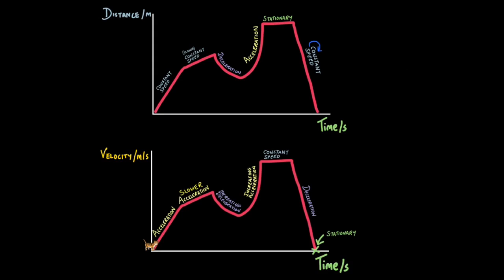A straight downward line on a velocity-time graph is a deceleration — getting slower and slower at a steady rate. Notice this doesn't mean the object is returning to the start; it's still continuing forward, just getting slower. If any part of the line is drawn on the horizontal axis, that means it's stationary — no velocity, not moving. So the cat's journey might look like: getting faster and faster, continuing to accelerate at a slower rate, then getting increasingly slower, then increasingly faster, then at a constant speed, then slowing down until they stop.